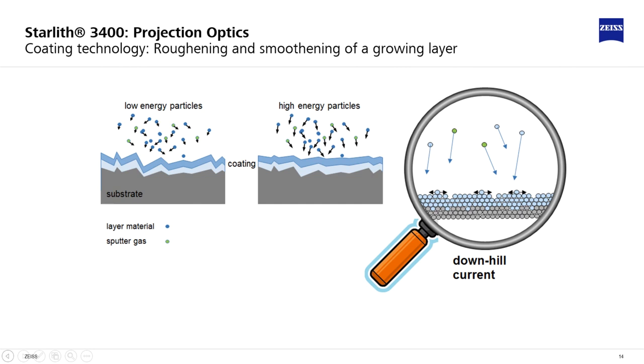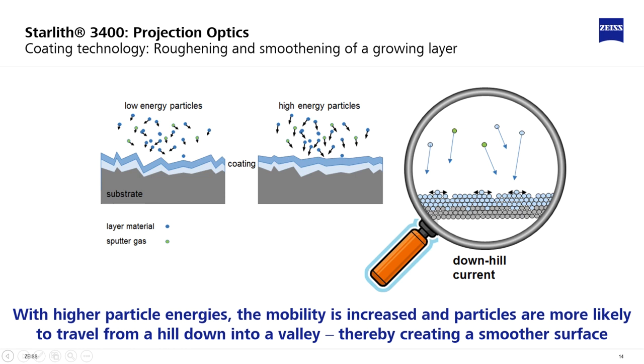If the energy of the particles on the surface is low, the lateral mobility is also low and the layer tends to roughening. With higher particle energies, the mobility is increased and particles are more likely to travel from a hill down into a valley, thereby creating a smoother surface.